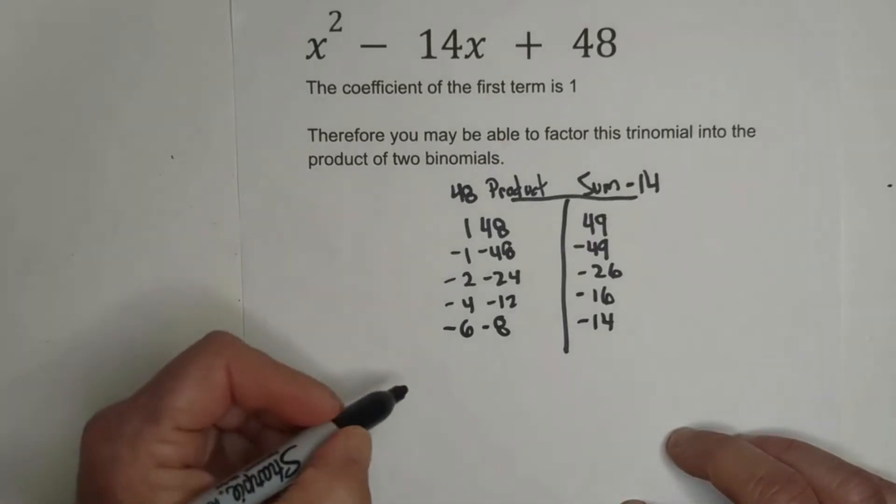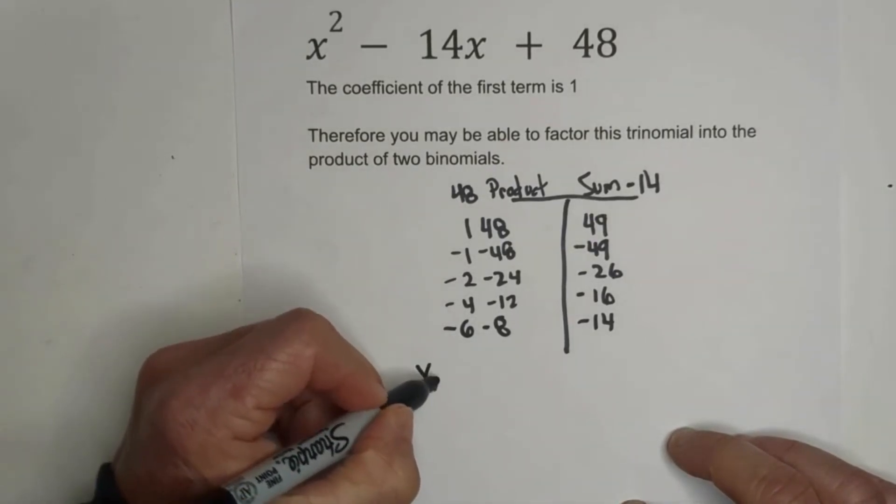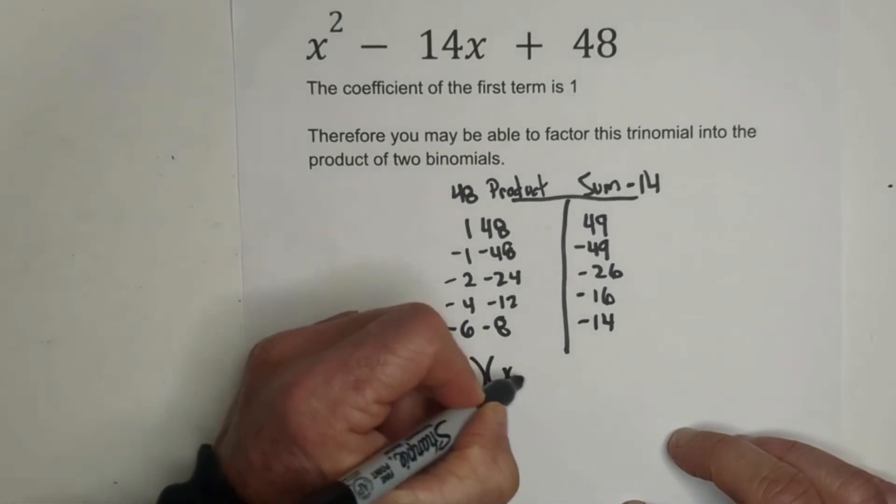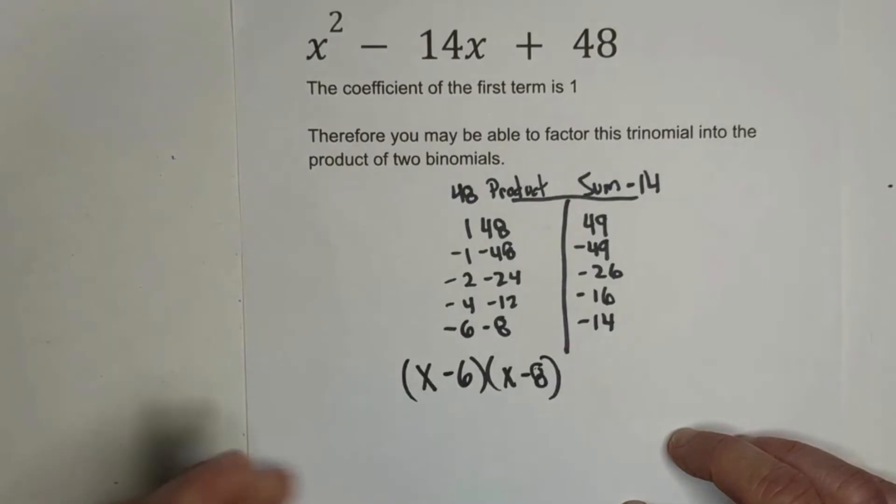So now all we do is write it as a binomial. X minus 6 times X minus 8.